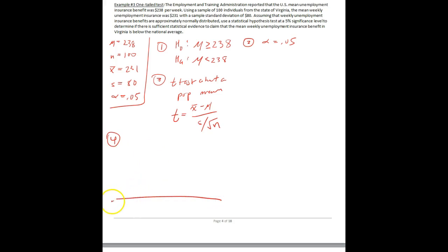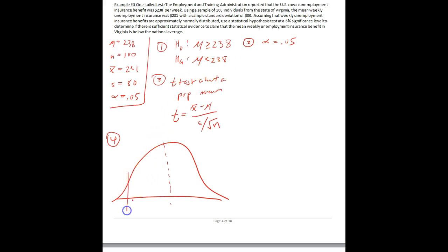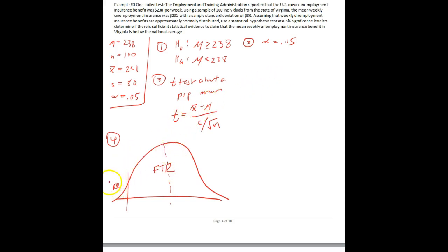Step four is to draw our picture and establish our rejection region. It's a bell curve and we want to put our rejection region in. We go to H-A and see it's pointing to the left, so our rejection region is over on the left side — that's the RR — and the fail-to-reject region is to the right. The rejection region is the size of alpha, 0.05, on the left and 0.95 on the right. We don't split alpha in half because we have one rejection region.